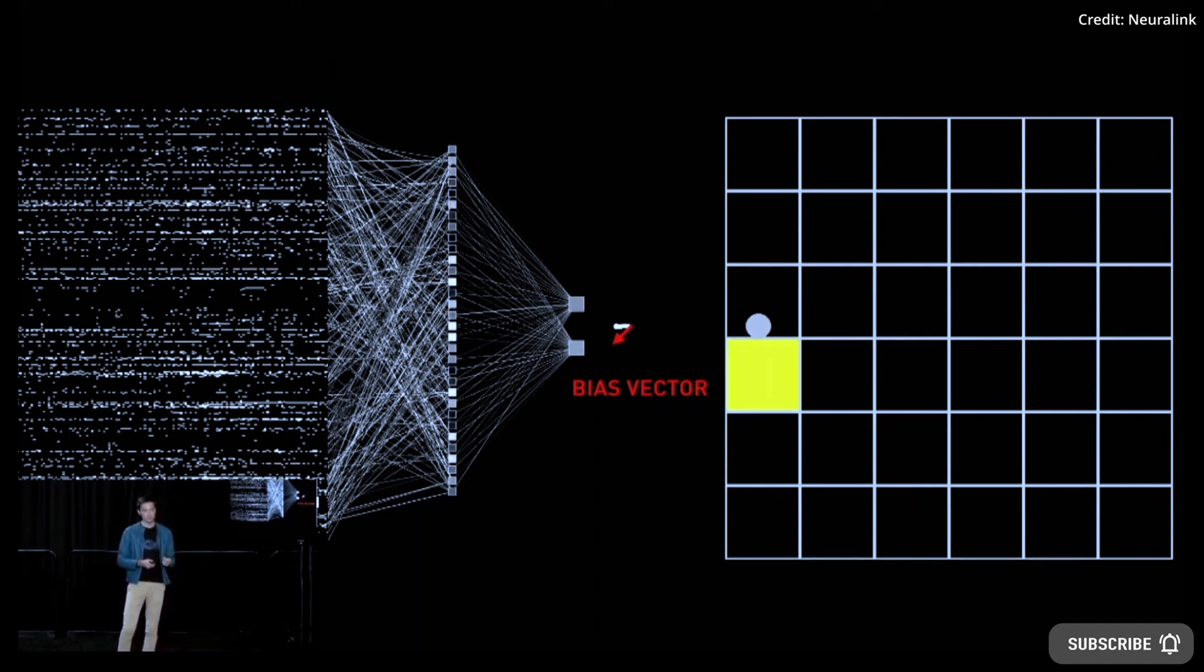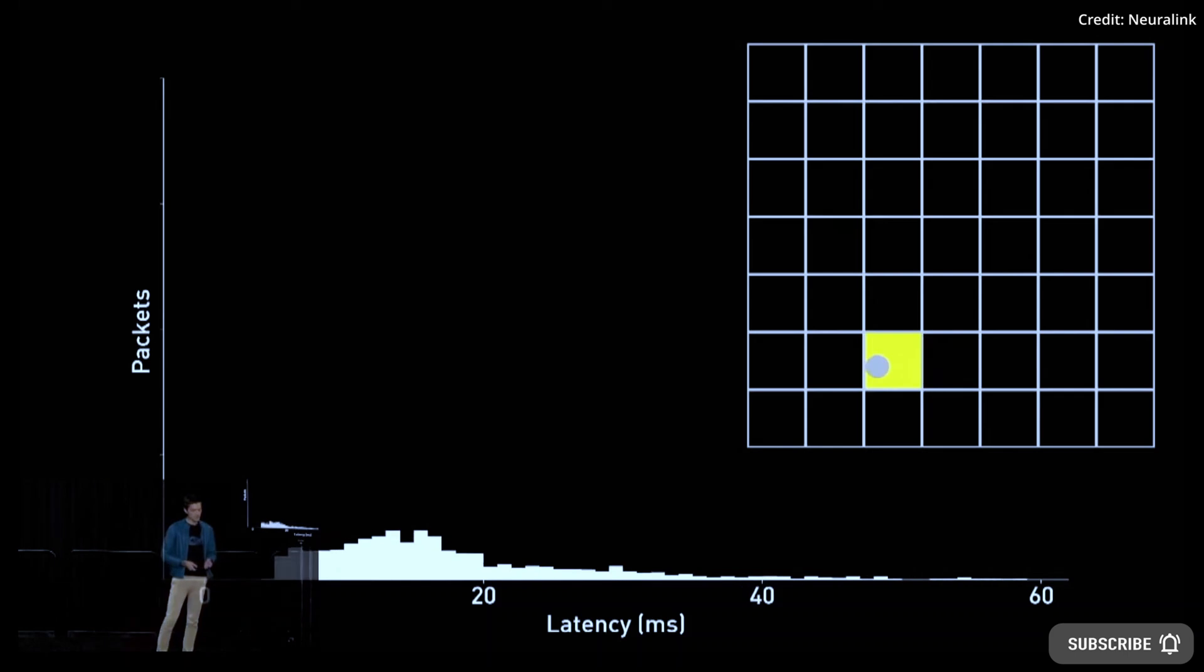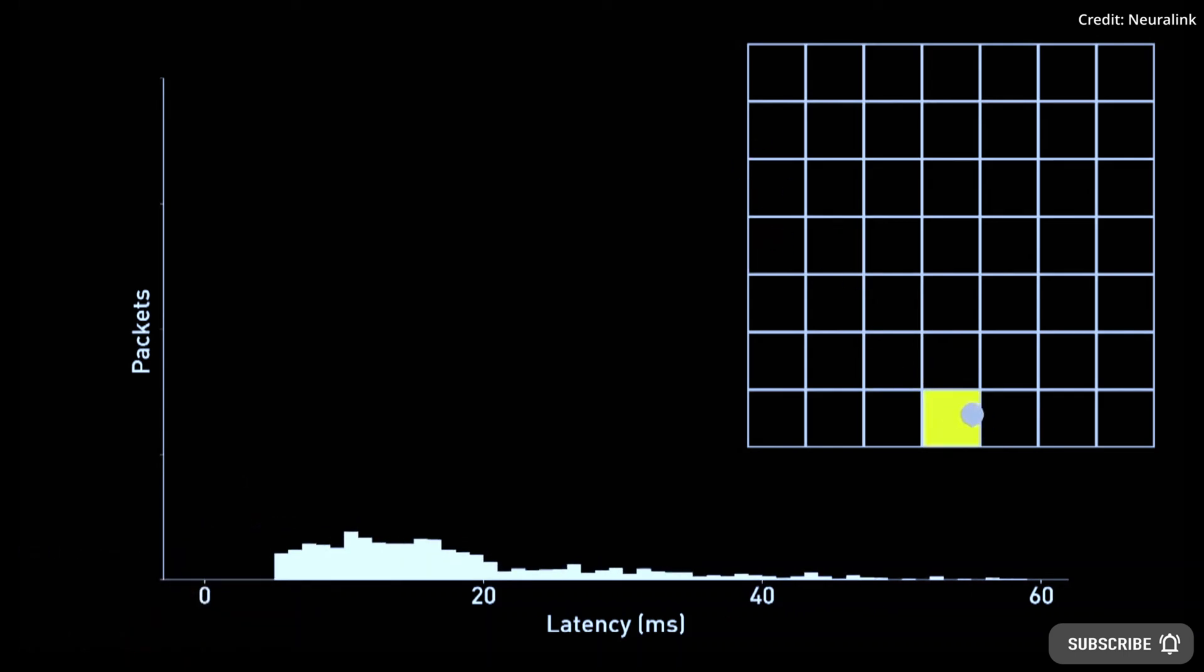Neuralink hopes the first application will enable people with quadriplegia to control a point and click computer cursor. Neuralink believes there are many other potential future applications for the link. These may include restoring motor, sensory, and visual function, as well as treatment of neurological disorders.